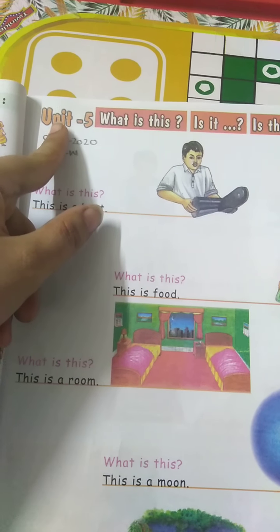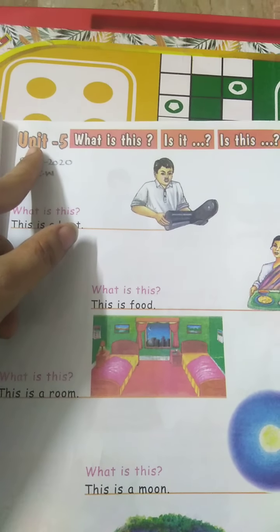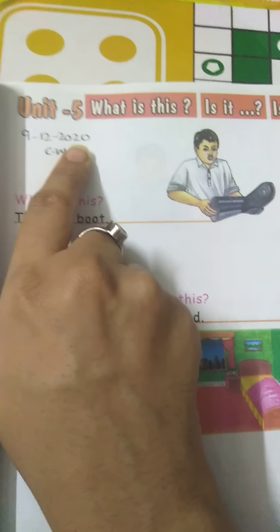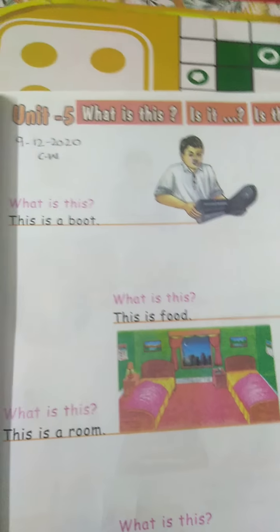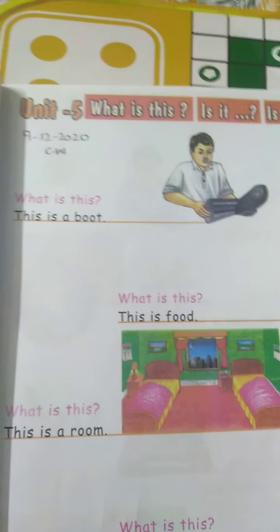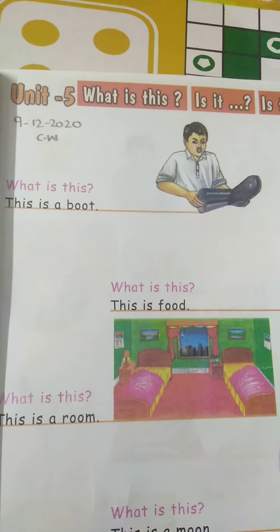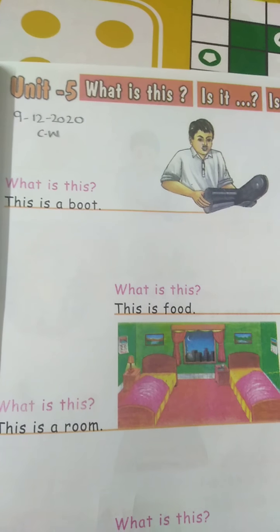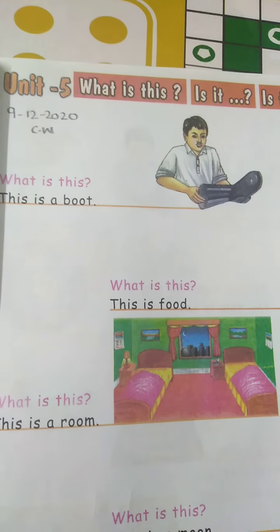All of you take out page number 23, Unit 5. This is the first unit of your final term. First you have to write the date and CW. Today's date is 9th of December 2020. Today is Wednesday — yesterday was Tuesday and tomorrow will be Thursday.